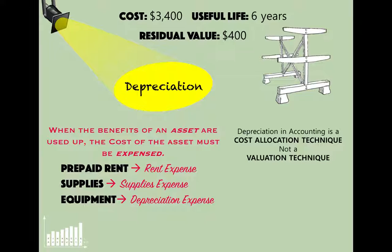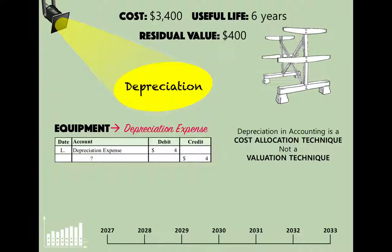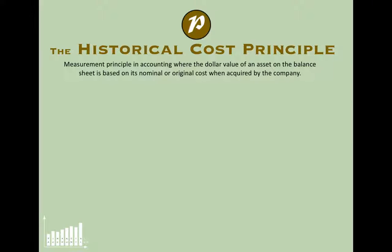The storage rack is serving a purpose — it allows Carl to display canoes so people come in and rent them. Just as we expense prepaid rent when we use up the benefit of rent, or supplies expense when we use up supplies, when we use up the benefits of equipment we debit Depreciation Expense. We then credit a somewhat unusual account. This all goes back to the historical cost principle.